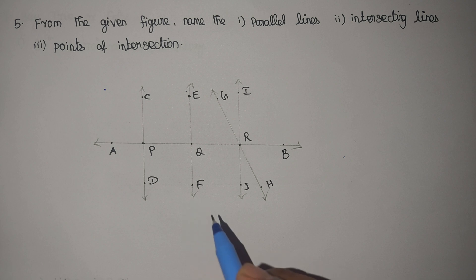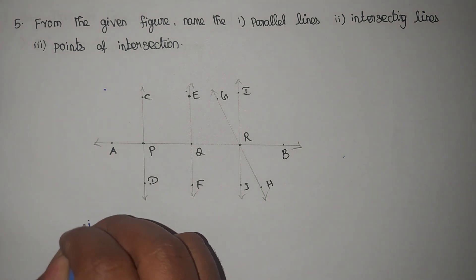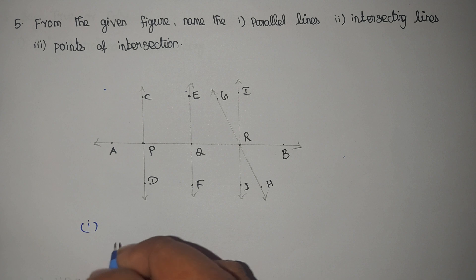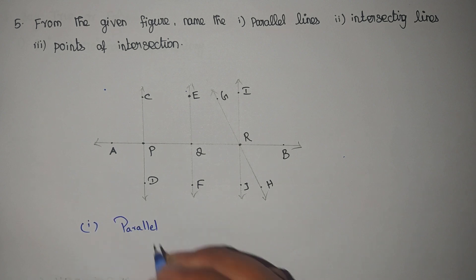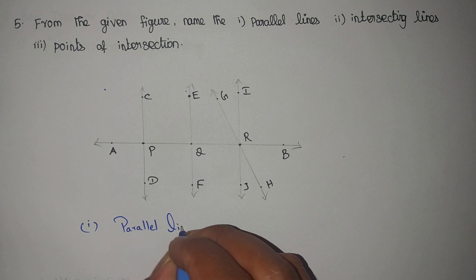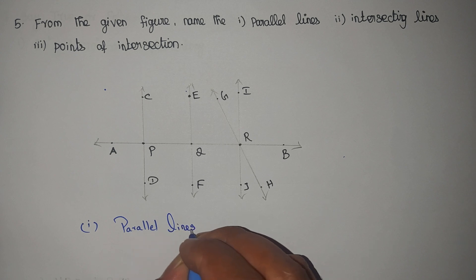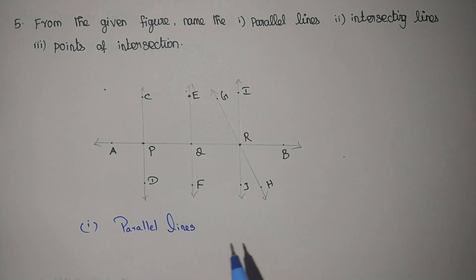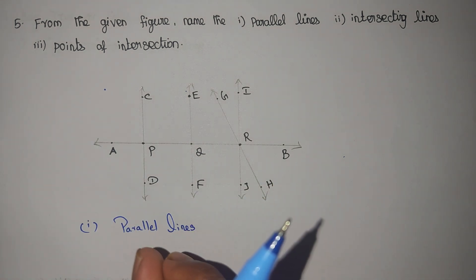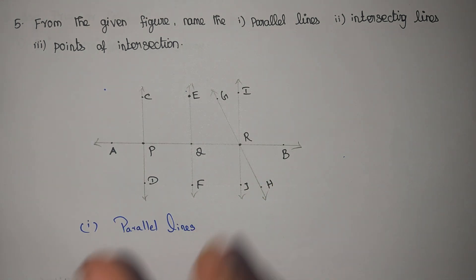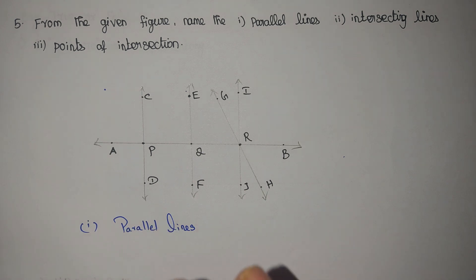This is the diagram. Question one is: parallel lines. In the diagram, which are the parallel lines? We need to find them out. Usually, parallel lines are two lines that never meet — they go on forever without meeting. That is parallel lines.